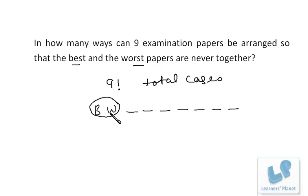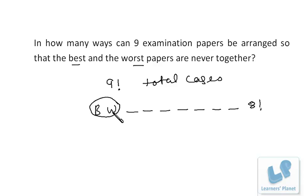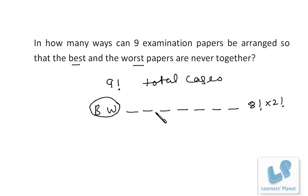So treating the pair as one, we have one plus seven equals eight items. Eight papers can be arranged in 8 factorial ways, and the two paired papers can be rearranged among themselves in 2 factorial ways. So when best and worst papers are always together, we have 8! × 2! cases. In the remaining cases, they will never be together.